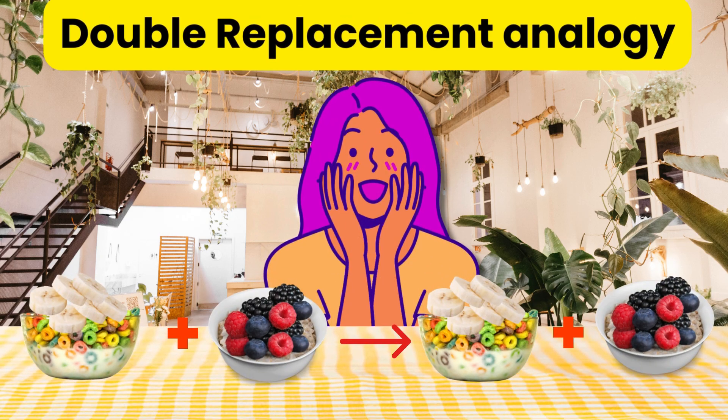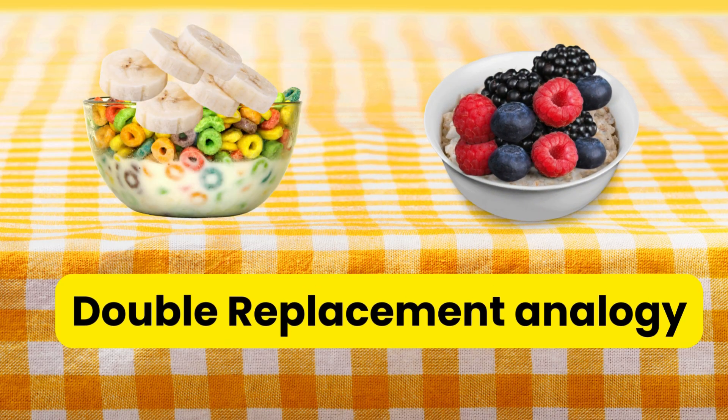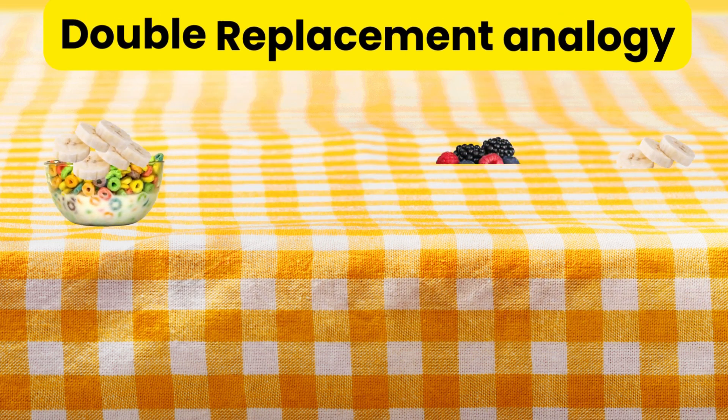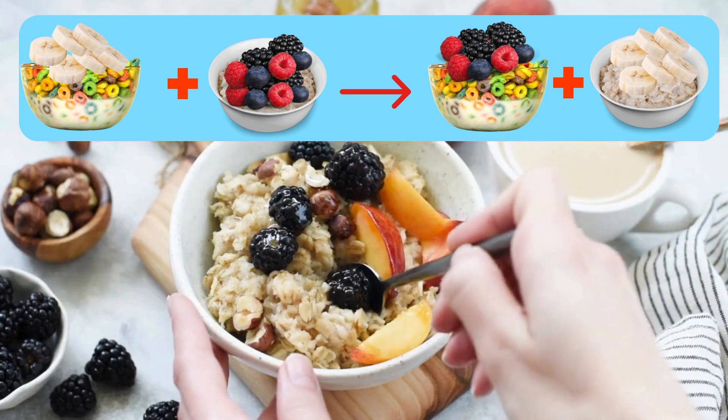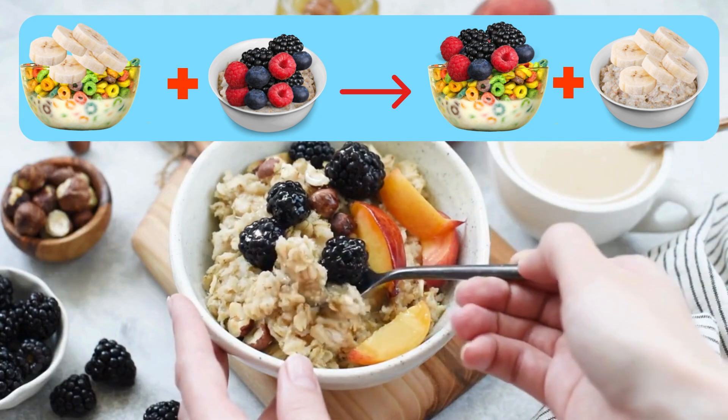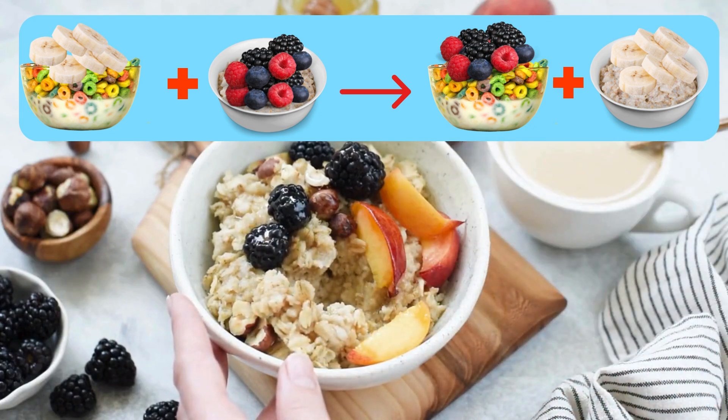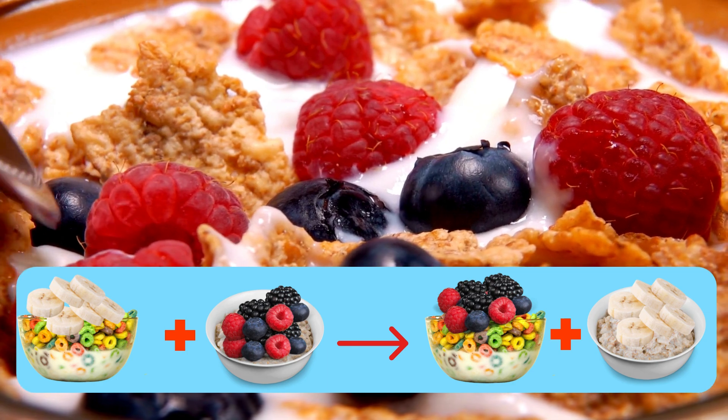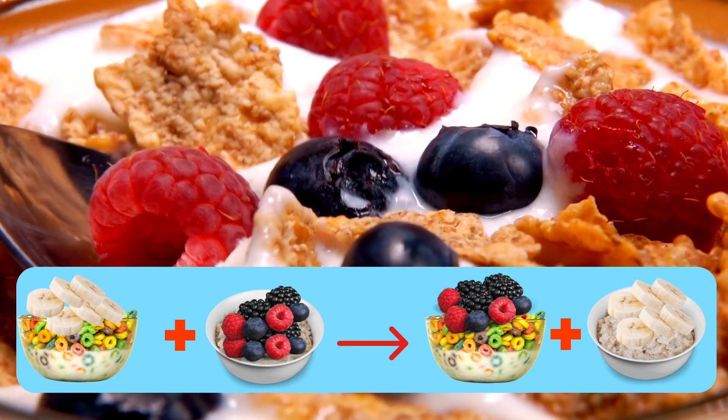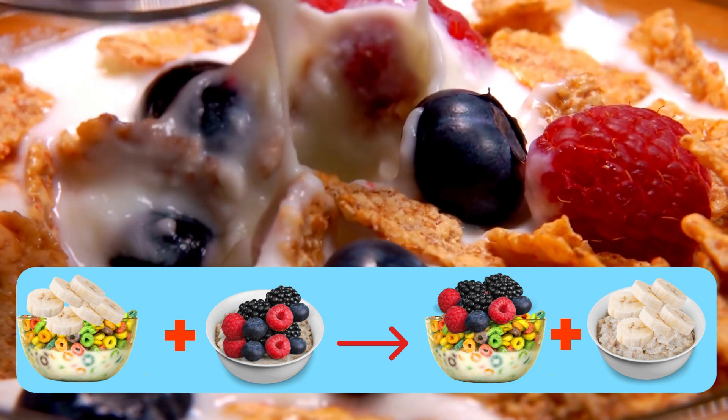Double replacement reaction analogy. We have two breakfast bowls here. Cereal with banana slices and oatmeal with berries. The toppings are swapped and we have cereal with berries and oatmeal with banana slices. Just like in a double replacement reaction where the ions swap places to form new compounds, here the toppings from each bowl are swapped to create two new breakfast combinations with different toppings.